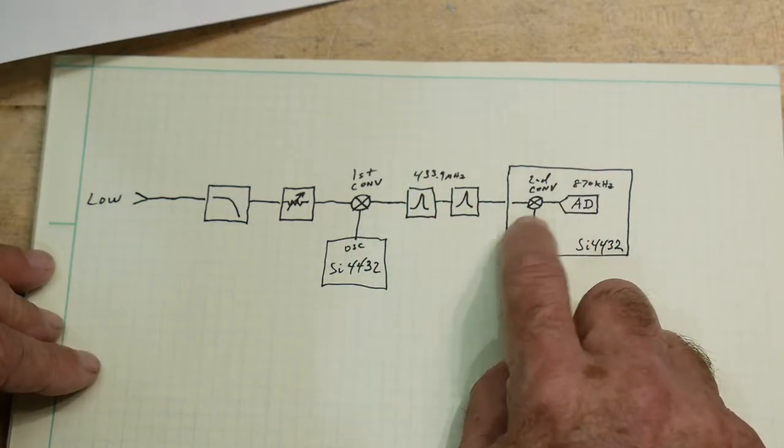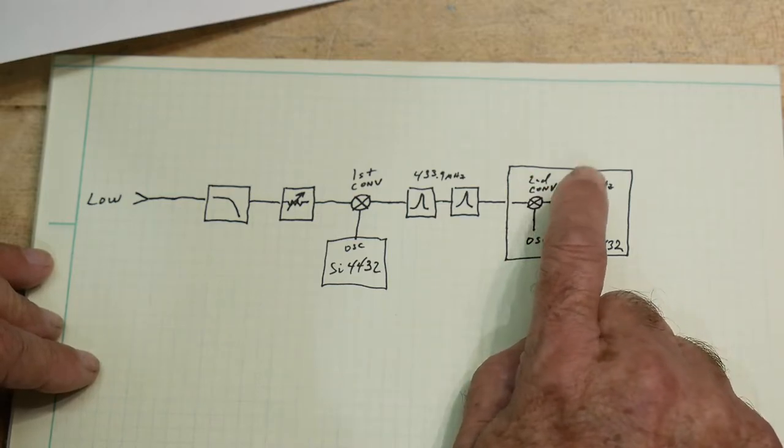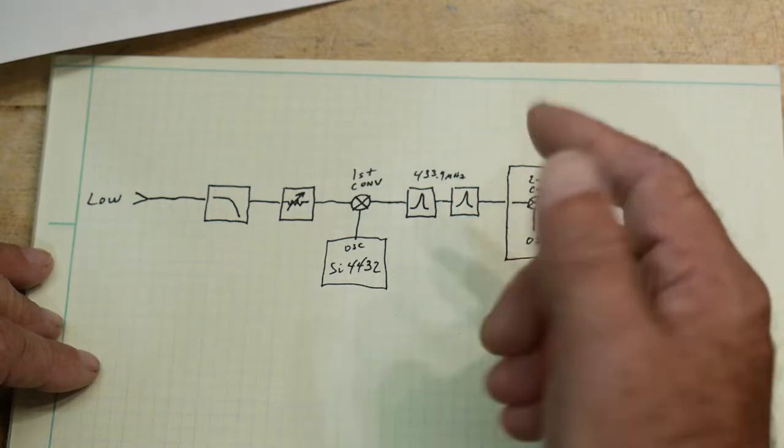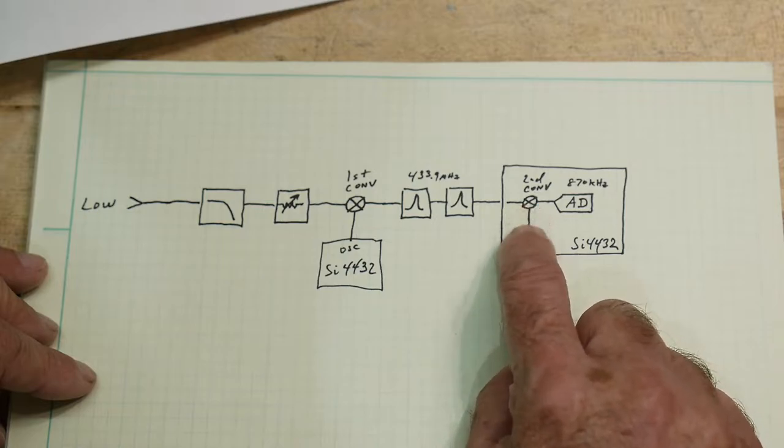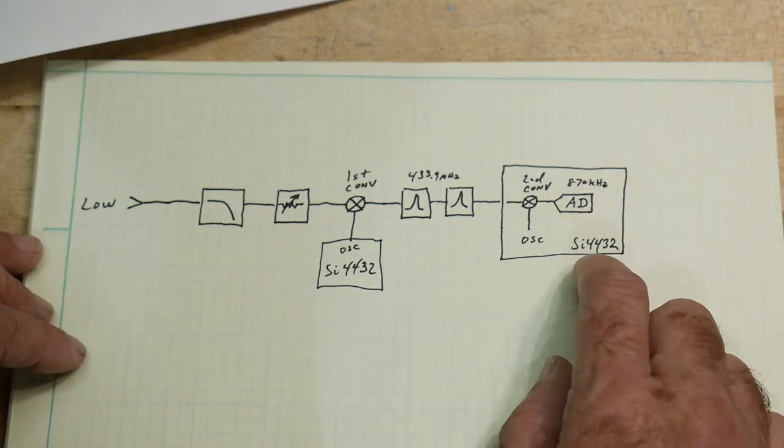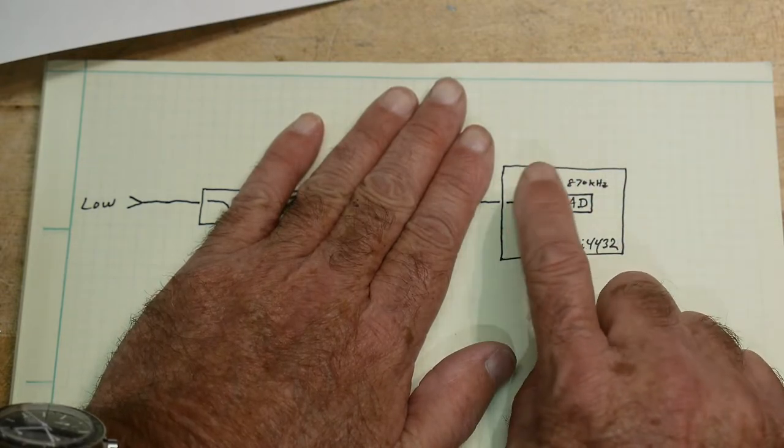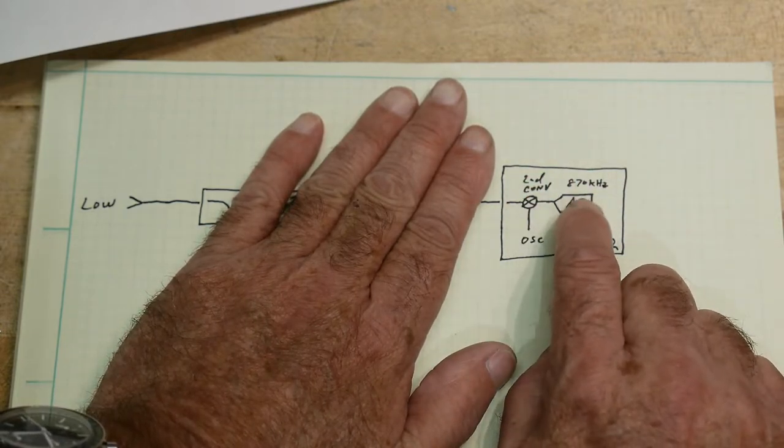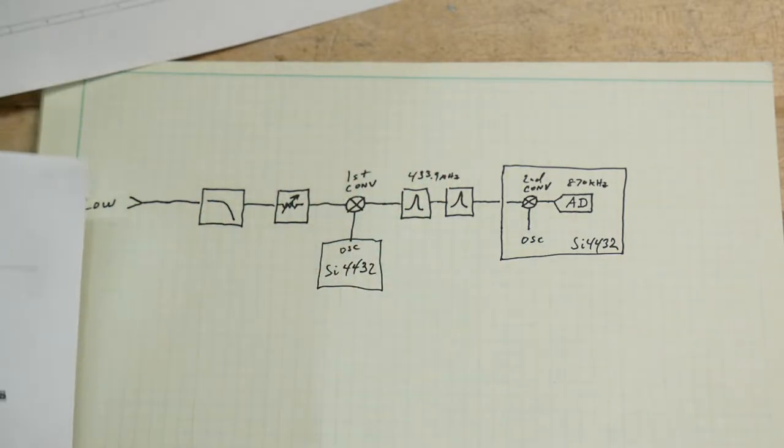And then it goes into a second conversion, and that gets converted down to 870 kHz, I believe. I've read that somewhere in the wiki. And so there's another oscillator that mixes it down, and then it goes into an A to D converter, and it's all software from then on. Now, this all happens inside a chip. So this mixer, and this oscillator, and A to D, this is all part of one chip. So it's a very, very fancy chip.